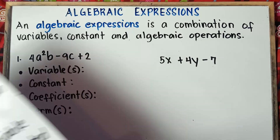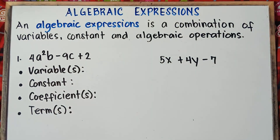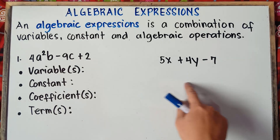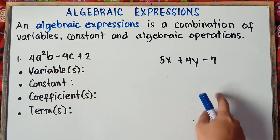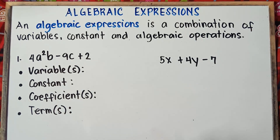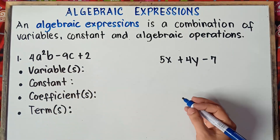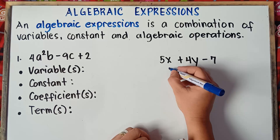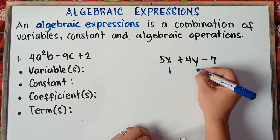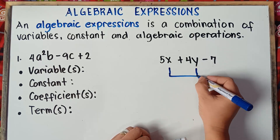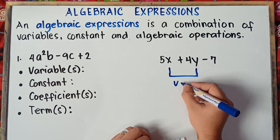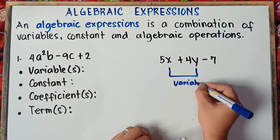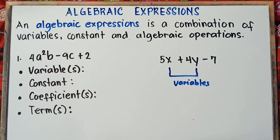So let's identify the variables, constant, coefficients, and terms with this given algebraic expression. Variables are the letters. So this x and this y — we call these the variables. The letters x and y are the variables.